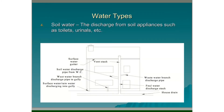Four is soil water. This is the discharge from soil appliances such as toilets and urinals. We can see an example in the diagram of a pipe coming from the toilet going into the discharge stack.